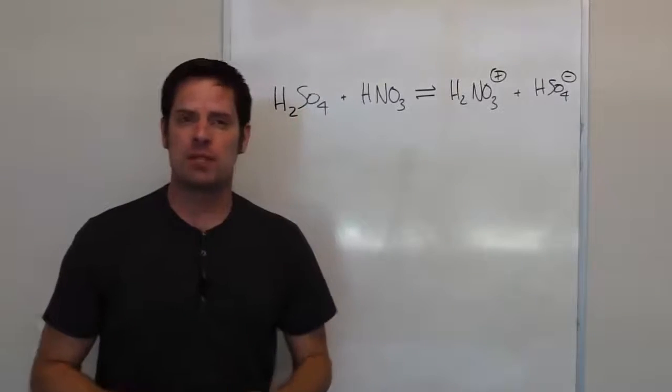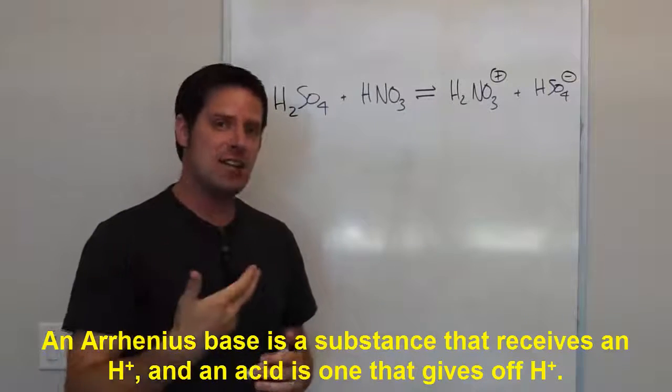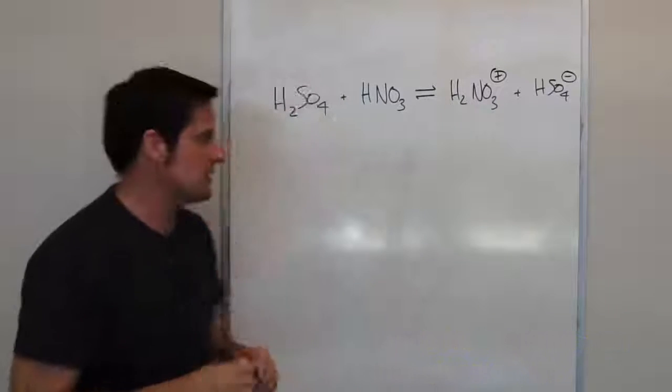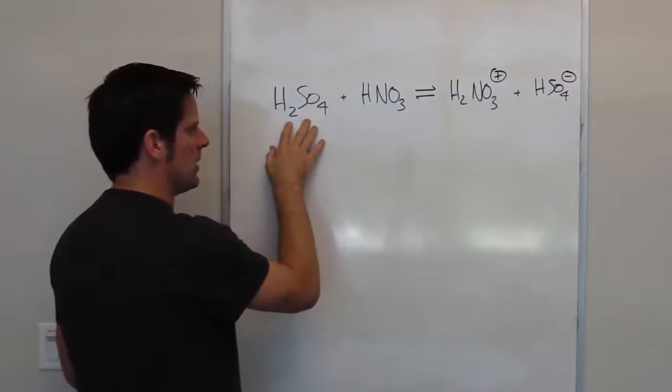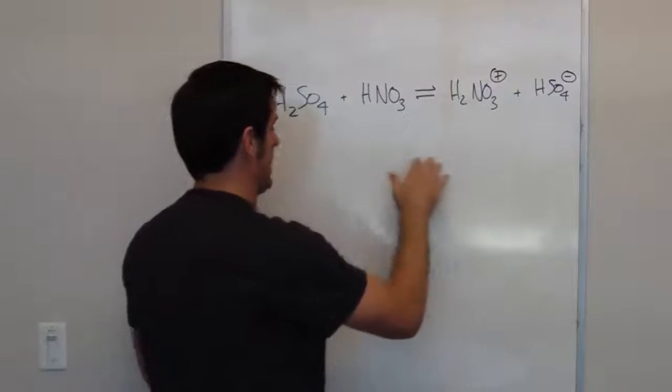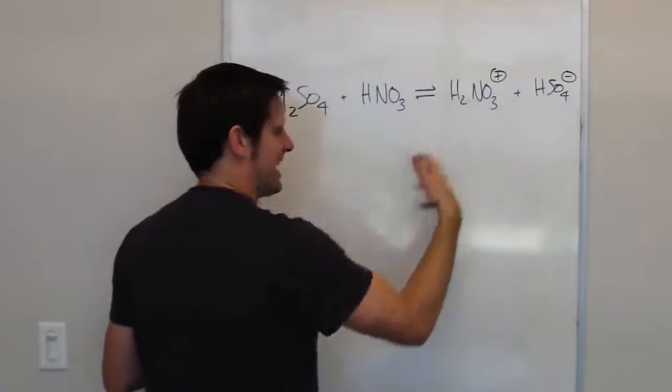In the context of our problems here, a base is something that receives or steals a hydrogen, and an acid is something that gives up a hydrogen. So let's take a look at this. Let's look at H2SO4, this molecule right here, and try to figure out what it turns into as we go from left to right. Which of the things on the right look like H2SO4? Kind of.